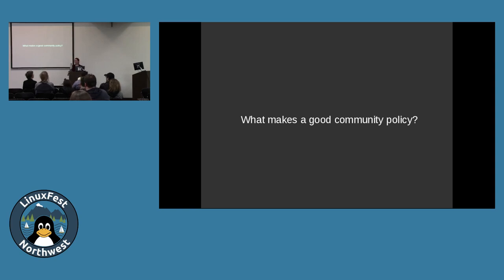Codes of conduct should have clear communication points — you should know who you're supposed to contact if somebody violates a code of conduct. It should include comments about repercussions, things that could happen should you violate the code of conduct. I was talking with a friend of mine who is a professor and teaches about collaborative communities. He ran a session in one of his classes about codes of conduct and community policies, and he noticed that his students responded very negatively consistently to reading what we considered to be really good community policies.